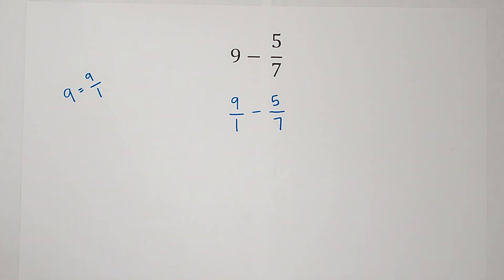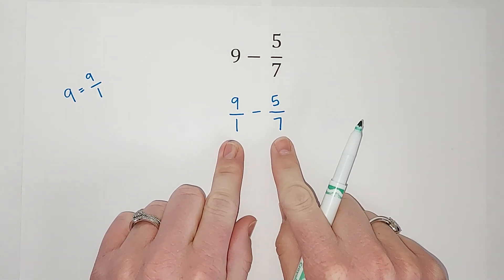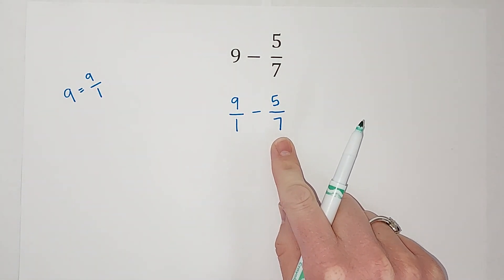So now, when we subtract fractions, my denominators, that's the bottom number, they need to be the same. So to get them the same, I look at them both. I have a 1 and a 7, and I think, what is the smallest number that they both go into?